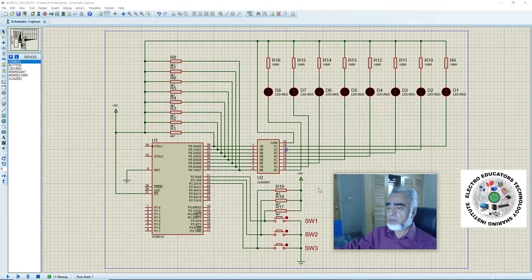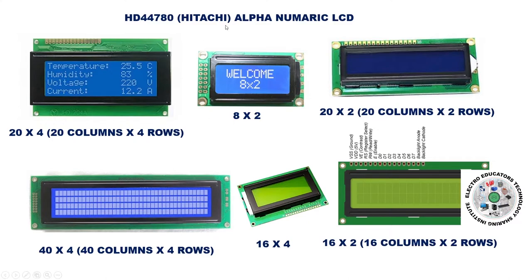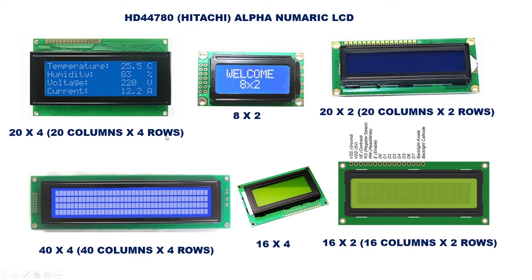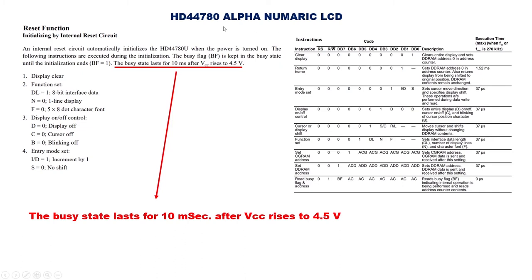Before interfacing an alphanumeric LCD with our project, we will first learn some basics of the alphanumeric LCD, then develop a circuit to interface it with the microcontroller. Here we can find different types of alphanumeric LCDs from Hitachi — that is the HD44780. LCD stands for liquid crystal display, and we can find alphanumeric LCDs in different configurations: 20x4 LCD with 20 columns and 4 rows, 8x2 LCD with 8 columns and 2 rows, 20x2, 40x4, 16x4, and 16x2 LCDs. Here we can find a particular page from the datasheet of the HD44780 alphanumeric LCD showing the instruction set.